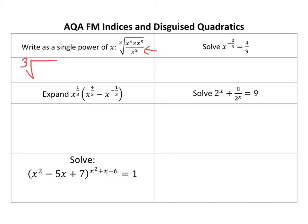So x to the power 4 times x to the power 5 is x to the power 9, divided by x to the power 2 is x to the power 7. Now a root is a fractional index, so we get x to the power 7 over 3.